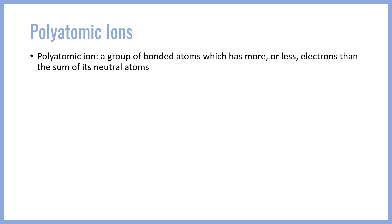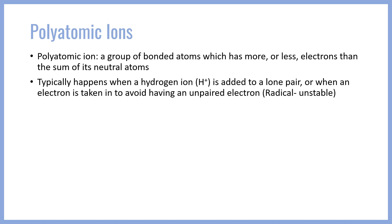A polyatomic ion is going to happen typically when a hydrogen ion is added to a lone pair to give a positive ion, such as the ammonium ion, or when electrons are taken in to avoid having unpaired electrons — i.e., a radical — which is somewhat unstable. So we can pick up electrons and get the overall minus charge to alleviate that unpaired electron strain.